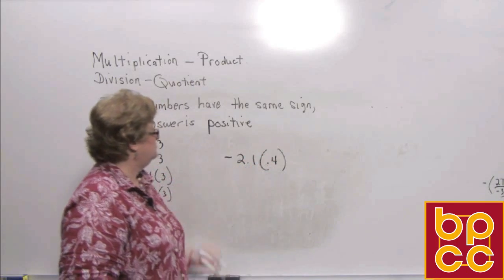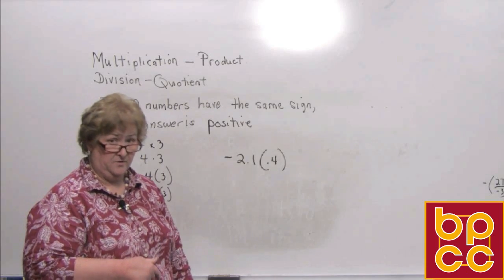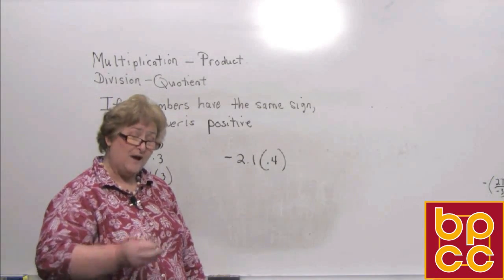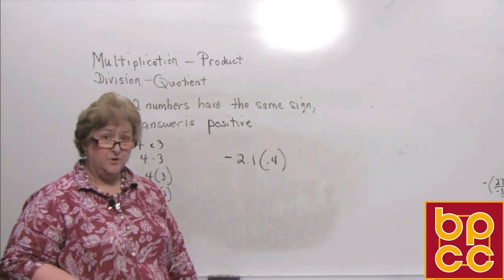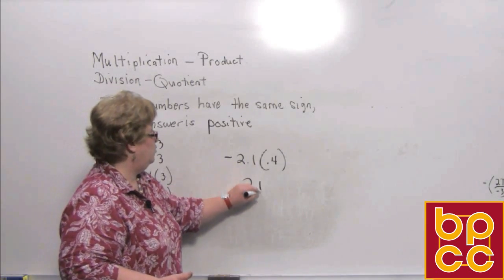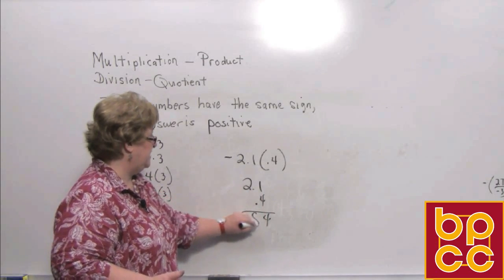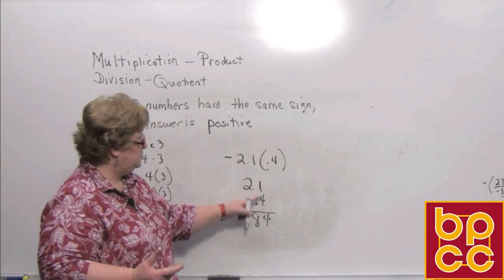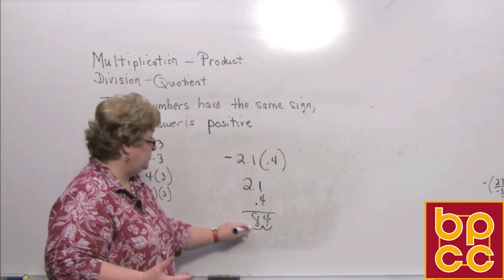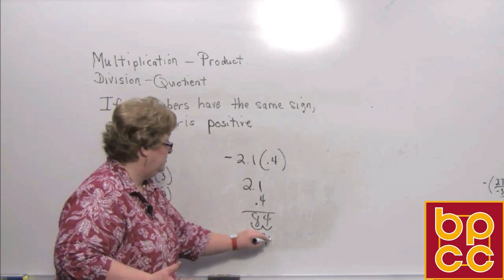Times 0.4. I'm doing this for two reasons: to make sure you know the answer is going to be negative because there's only one negative number, and also to remind you that when you multiply, you have to add the number of decimal places to the right of the decimal for placement of your decimal in your answer. So I'm going to multiply 2.1 times 0.4. 4 times 1 is 4, and 4 times 2 is 8. We have one decimal place in each number, so two total — starting at the end and moving over two places, the answer is a negative 0.84.